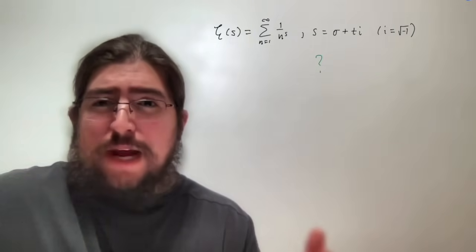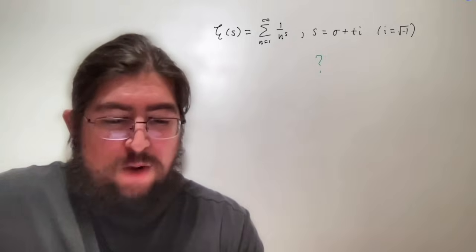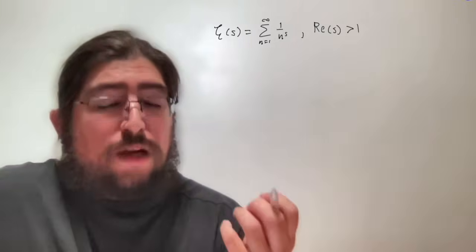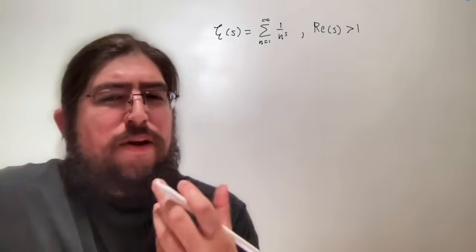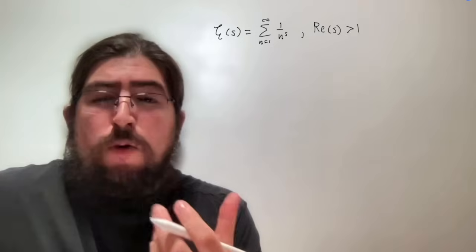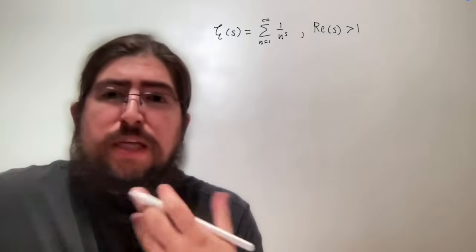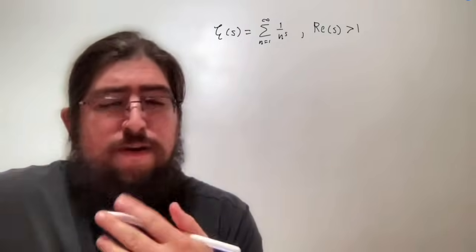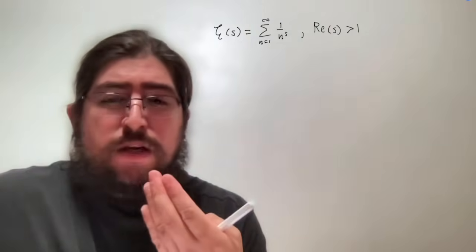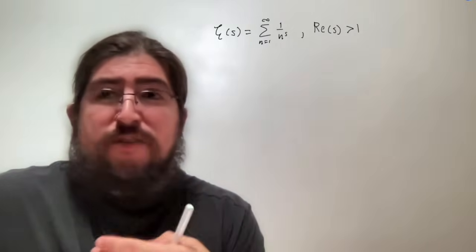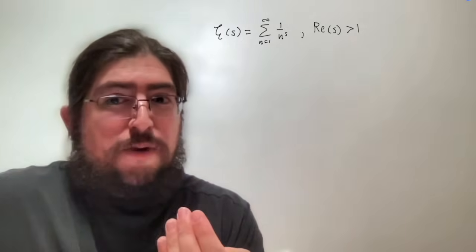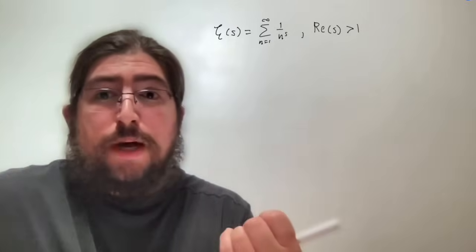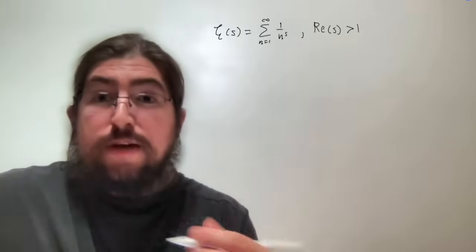So how do we make this continuation a reality? The reason zeta's sum only converges when Re(s) > 1 was p-series. But if you recall from calculus, alongside p-series there's the alternating series. The alternating p-series actually converges when p is just purely positive. So let's look at what that would look like in the context of the zeta function — enter the Dirichlet eta function.